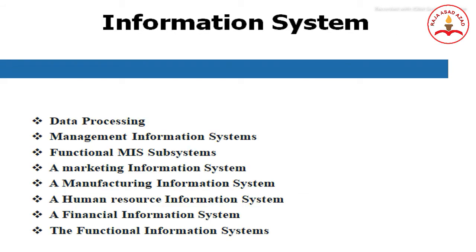Information systems used in organizations include data processing (DP), management information systems (MIS), functional management information subsystems, a marketing information system, a manufacturing information system, a human resource information system, a financial information system, and other functional information systems.